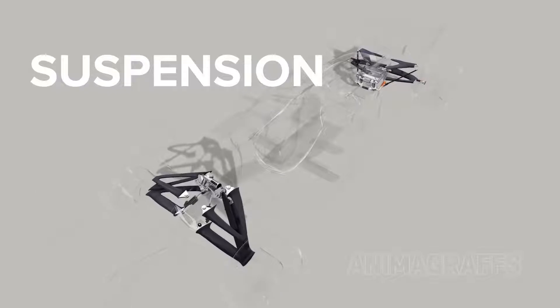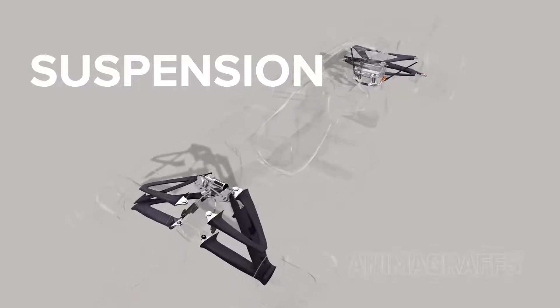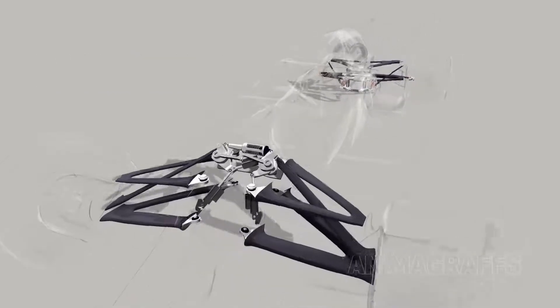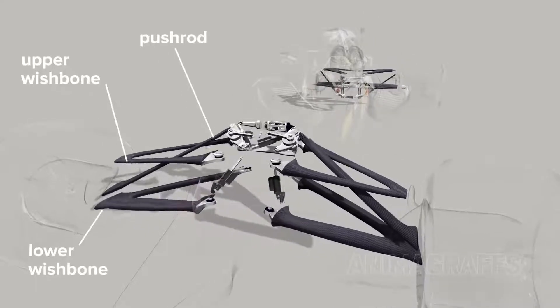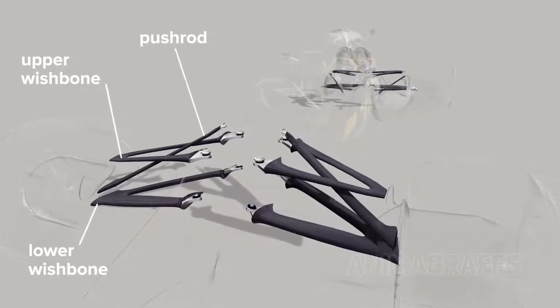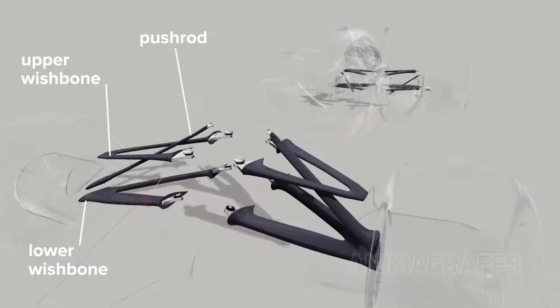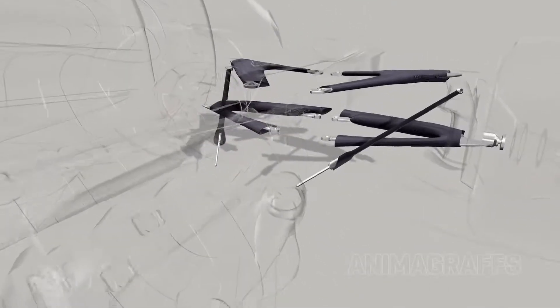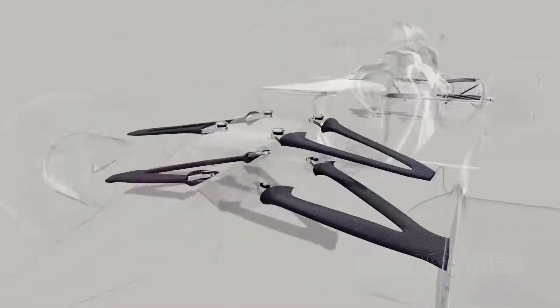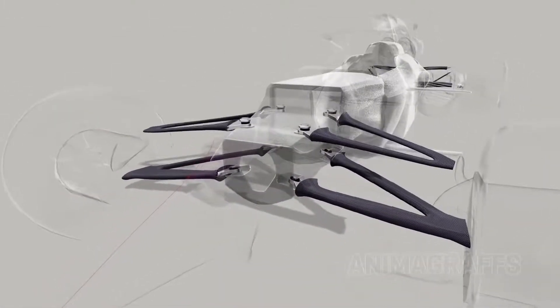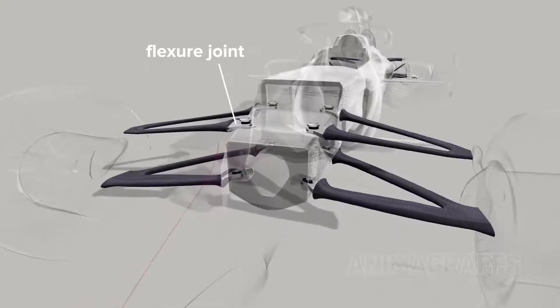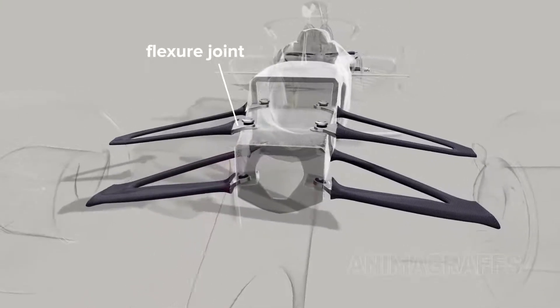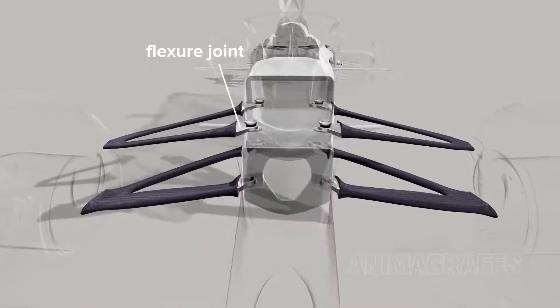Both front and back suspension setups share similar components: upper and lower wishbone arms with a push or pull rod. The wishbones are rigid structural supports with limited vertical travel. At the front, where heat isn't an issue, wishbones are directly attached to the monocoque and have simple flexure joints designed to bend under load.